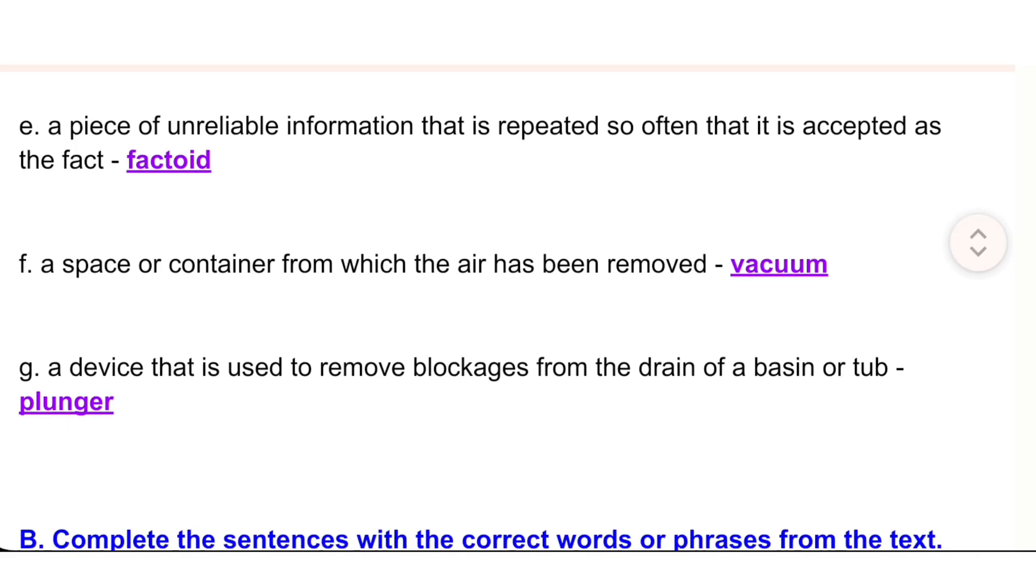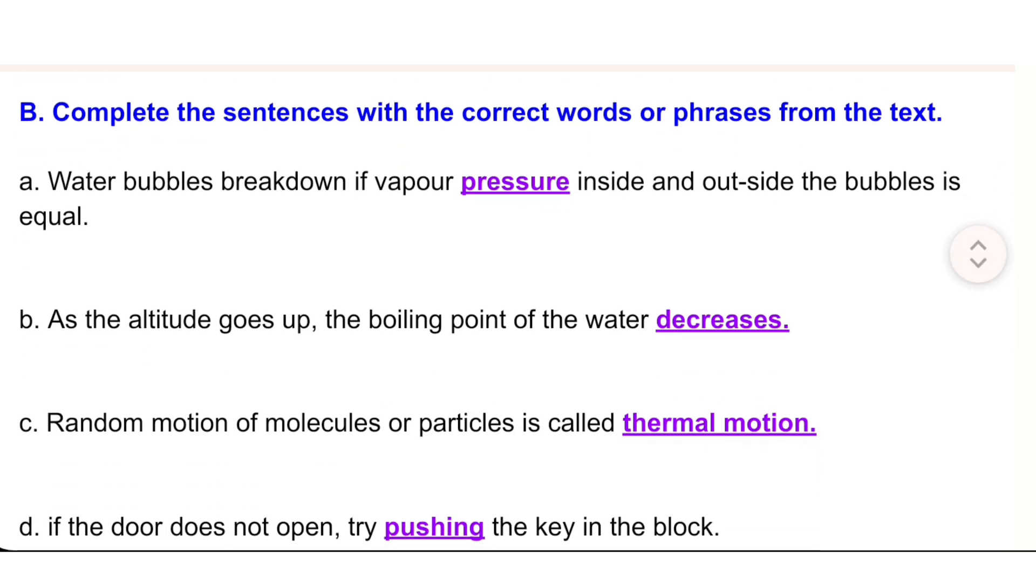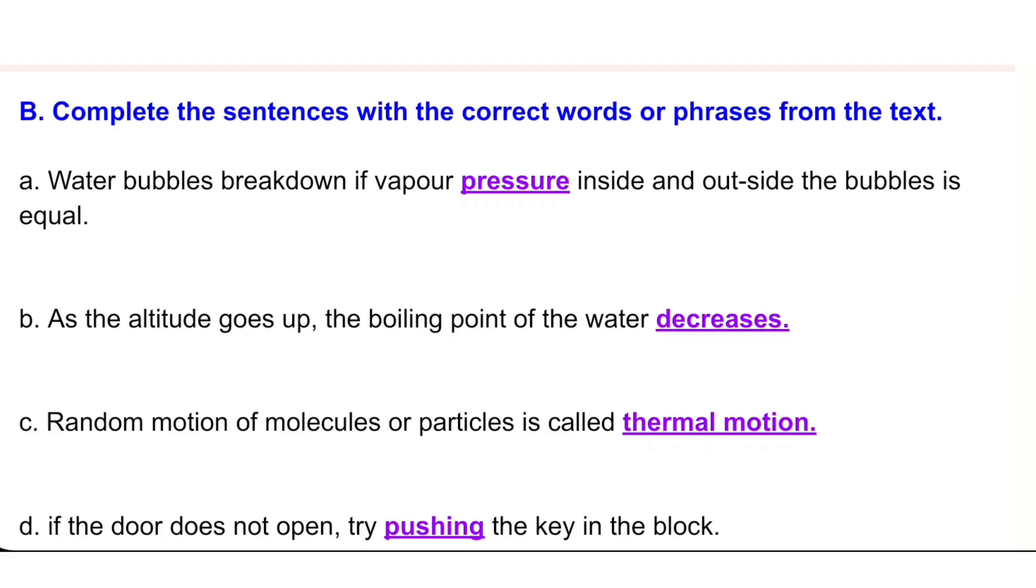g) a device that is used to remove blockages from the drain of a basin or tub - plunger. B. Complete the sentences with the correct words or phrases from the text. a) Water bubbles break down if vapor pressure inside and outside the bubbles is equal. b) As the altitude goes up, the boiling point of the water decreases.